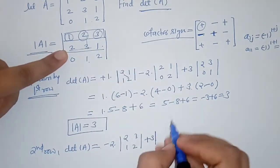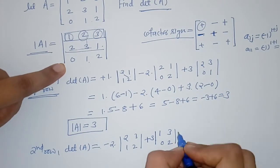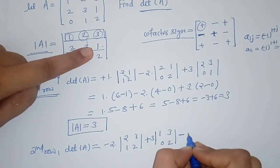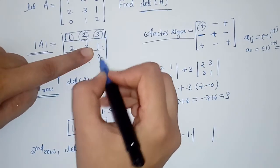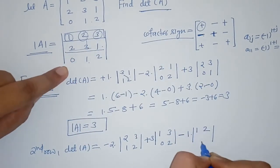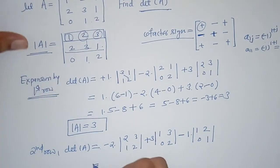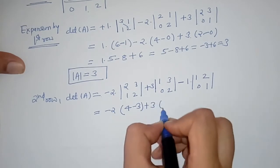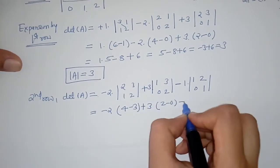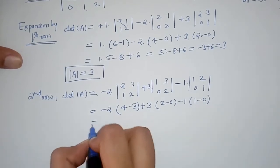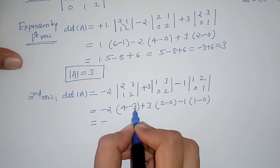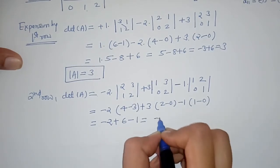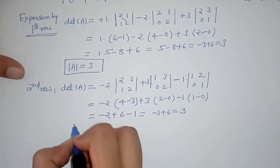The third element for the second row has a negative sign, giving minus 1 with minor from elements 1, 2, 0, 1. Simplifying: minus 2×(4−3) plus 3×(2−0) minus 1×(1−0) = −2×1 + 3×2 − 1×1 = −2 + 6 − 1 = 3. So the determinant by expansion by the second row is also 3.